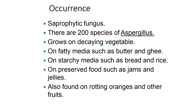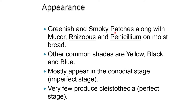Coming to the occurrence of Aspergillus, it is a saprophytic fungi. There are 200 species of Aspergillus. They grow on decaying vegetables, on fatty media such as butter and ghee, on starchy media such as bread and rice, and even on preserved food such as jams and jellies. They are also found on rotting oranges and other fruits. Appearance could be greenish or smoky patches. They can grow along with Mucor, Rhizopus, and Penicillium on moist bread. Other common shades are yellow, black, and blue. Mostly they appear in the conidial stage, that is the imperfect stage. Very few produce cleistothecia, that is the perfect stage.